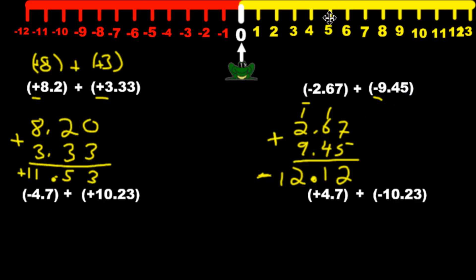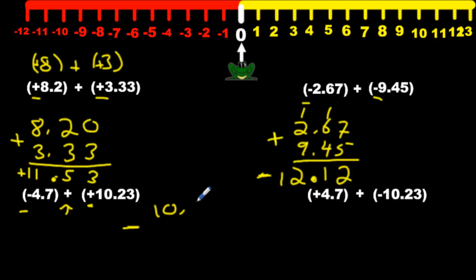Now let's move to this one. We have a negative and a positive number being added — that has to be addition. They're different: bad guy with a good guy, they don't get along, so we have to subtract. Ignore the signs — we just look at the numbers: 4 versus 10. When we subtract, the big number comes first, so put the 10 on top. Order doesn't matter when you add, but it does when you subtract. So we have 10.23 minus 4.7. How did I know to minus? Because the signs were different.